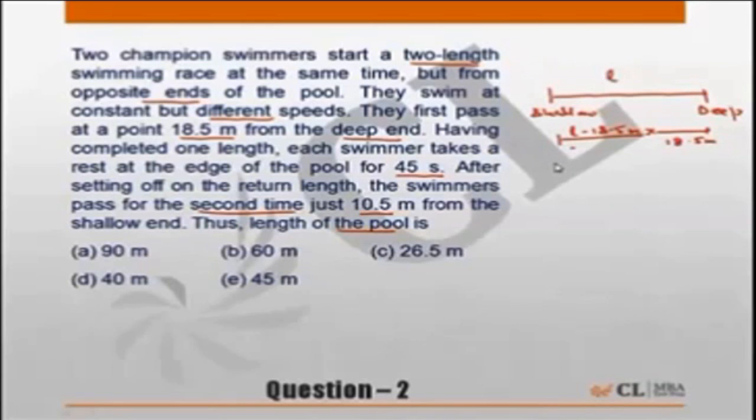Then once they reach the edge, the respective or the opposite ends, both of them rest for 45 seconds. And then embark on the return journey and then they meet 10.5 meters from the shallow end. So effectively the person who started from the deep end, he reached the shallow end, rested for 45 seconds, and turned back and met the other person, let's say 10.5 meters from the shallow end. So this is the place where they have met. So the distance covered by him now is length of the pool plus 10.5.